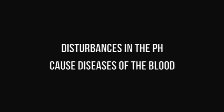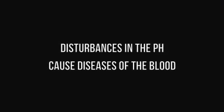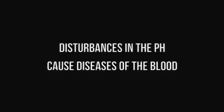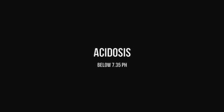Blood is as prone to disease as any other part of the human body, and disturbances in the pH can lead to those diseases. If the pH of your blood falls below 7.35, the result is a condition called acidosis that leads to central nervous system depression. If the pH of your blood rises above 7.45, the result is alkalosis. Severe alkalosis can lead to death, but through a different mechanism than acidosis.